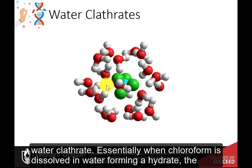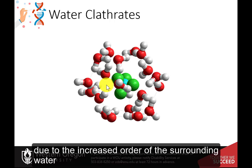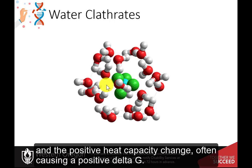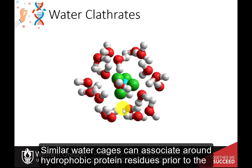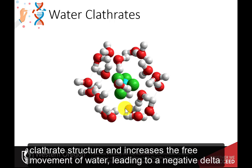Essentially, when chloroform is dissolved in water forming a hydrate, the hydrophobic hydration is accompanied by a negative entropy change due to the increased order of the surrounding water and the positive heat capacity change, often causing a positive delta G. Similar water cages can associate around hydrophobic protein residues prior to the correct folding. The folding inward of the hydrophobic groups then releases the water clathrate structure and increases the free movement of water, leading to a negative delta G.